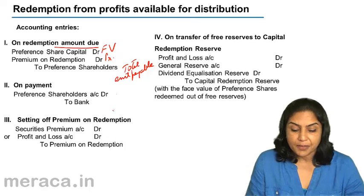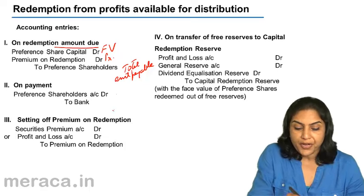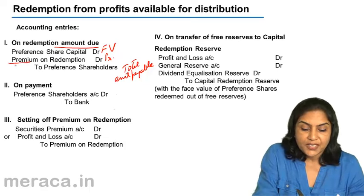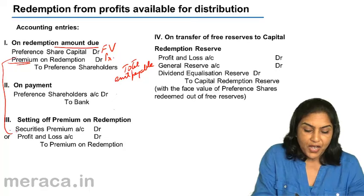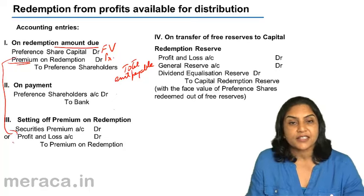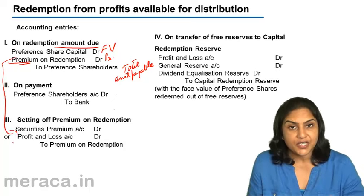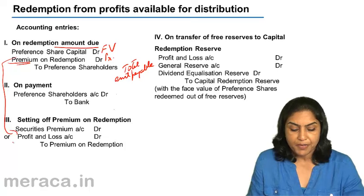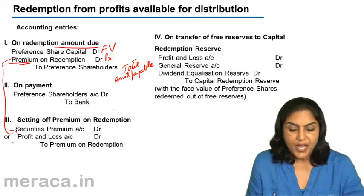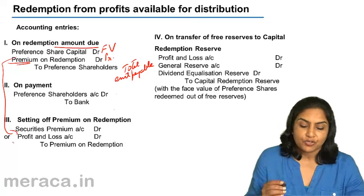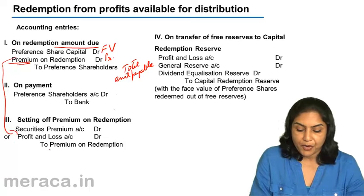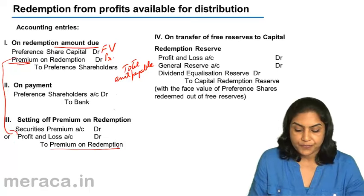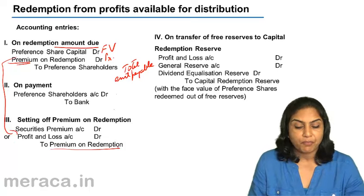If there is a premium on redemption, this has to be set off — either against the securities premium, if there is enough balance, or through the profit and loss account — to premium on redemption of preference shares.